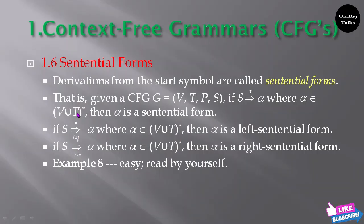V is the set of variables and T is the set of terminals. These are combined and repeated. You can make N number of combinations here. Then alpha is a sentential form.